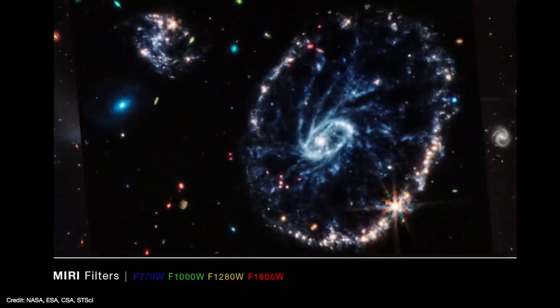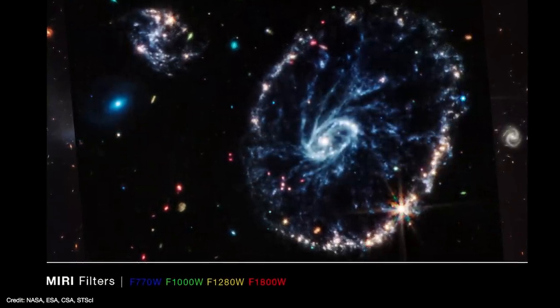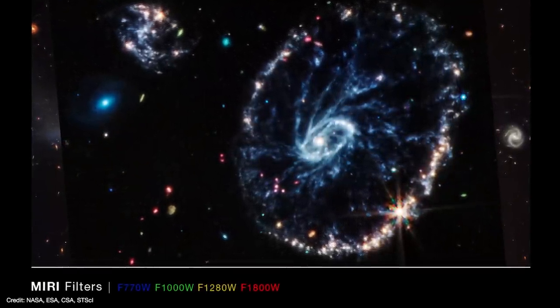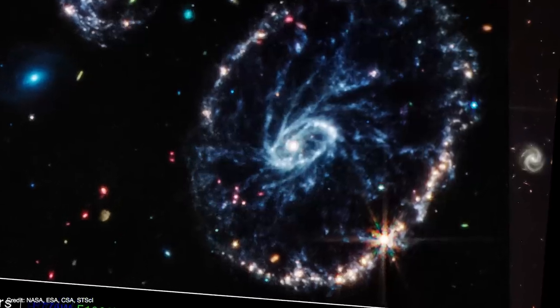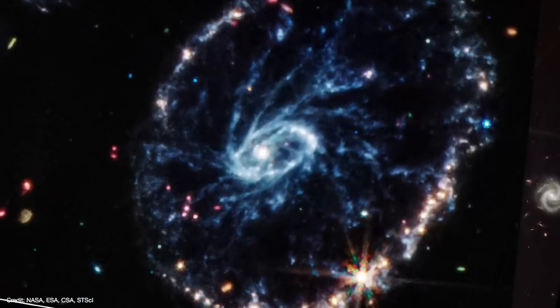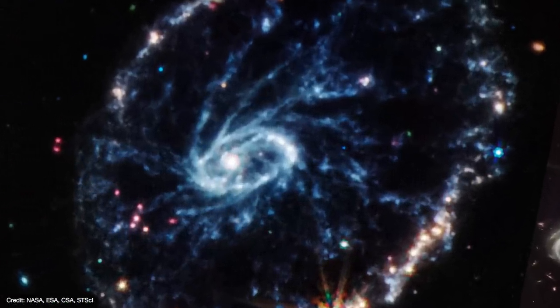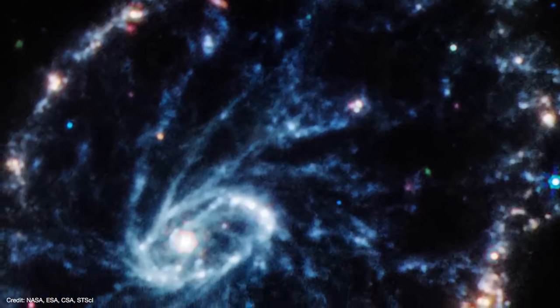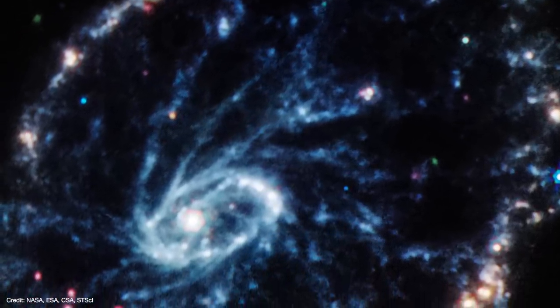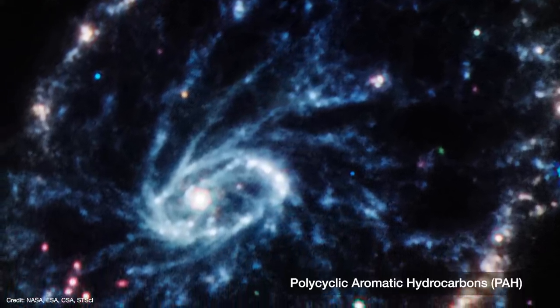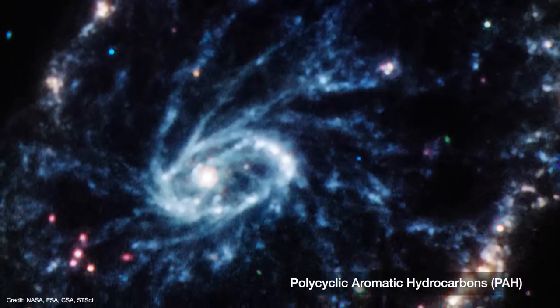It gets even better with MIRI, which images the cartwheel from 7.7 to 18 microns. That takes us well out into the mid-infrared and detect the thermal emission. We don't see as many stars in this part of the spectrum because they're not particularly bright at these wavelengths. But we do see the warm glow of hydrocarbons, organic compounds, silicate dust, and polycyclic aromatic hydrocarbons, or PAHs.